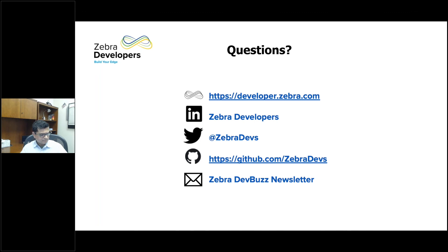Next question: Are you still discontinuing support for XML-based MX submission in Android 13 and supporting only JavaScript-based MX? If so, when can we expect a new StageNow version that allows for JavaScript export for EMMs? For the first part: yes, XML will no longer be used. For the second part, the beta of the new StageNow is already going around and we need to get you a date — we'll get you the date of when the first version will be available.